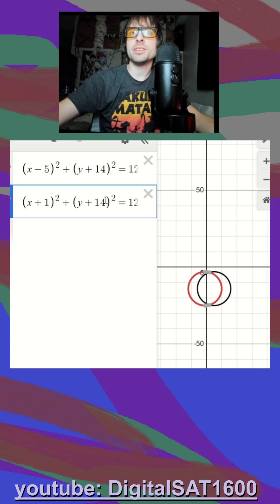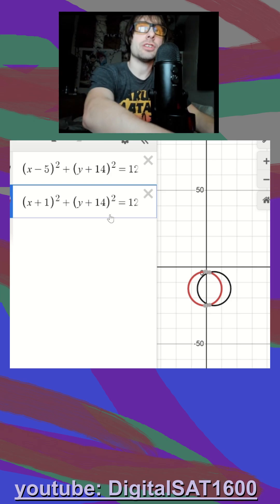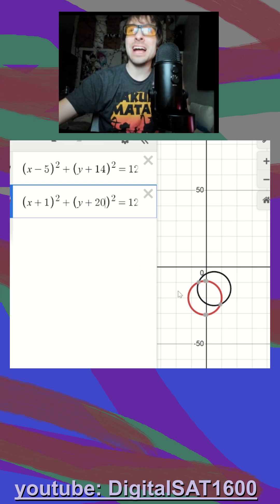And just in case you wanted to see it, it's going to be the same thing since it's y, but in parentheses, if we wanted to shift this down six, we would add six to make it 20. And you can see it goes down, even though I added.